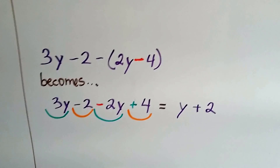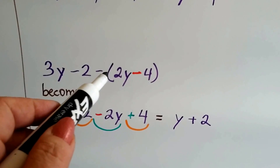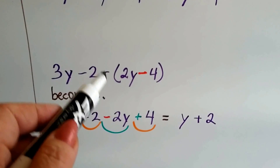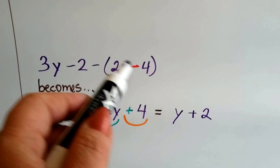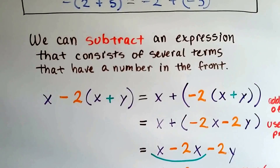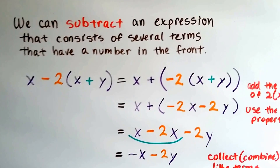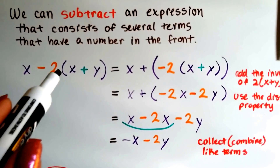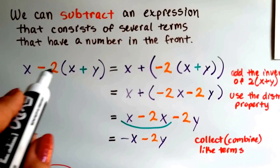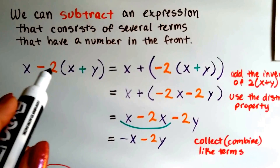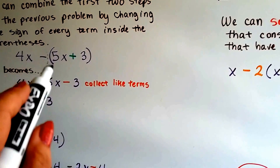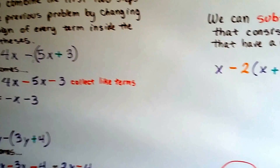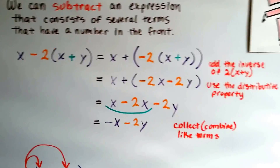Just remember: when you see a negative sign right in front of parentheses with nothing there, we can just distribute it and change the signs of the terms inside. We can also subtract an expression when there's a number in the front — it doesn't just have to be a negative sign and then parentheses, there could be a number there. Look what happens when we've got a negative 2 — it's the same as when we had the negative sign with the invisible 1. Imagine now there's a 2 there instead. Same thing: we distribute it to everything and change the signs.